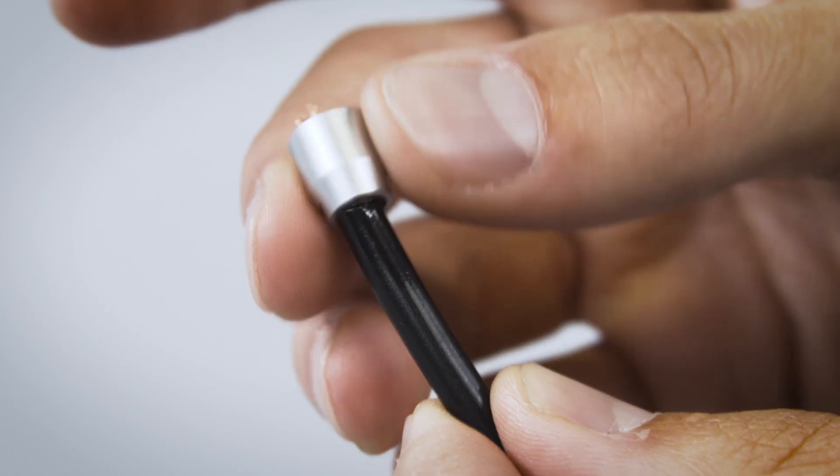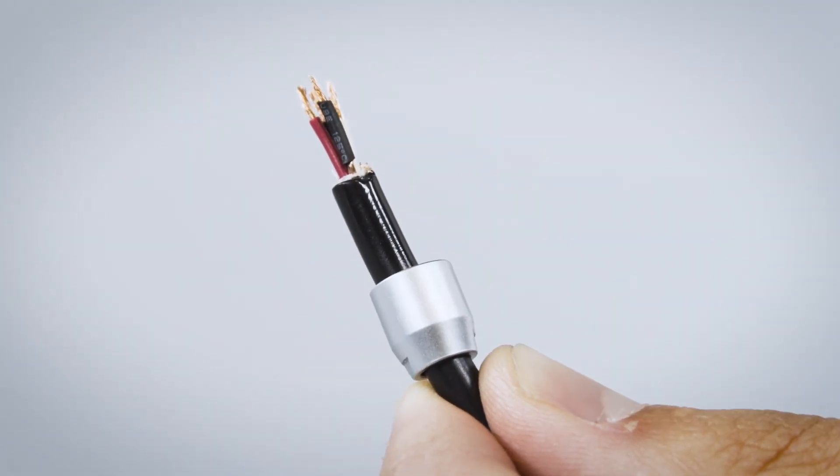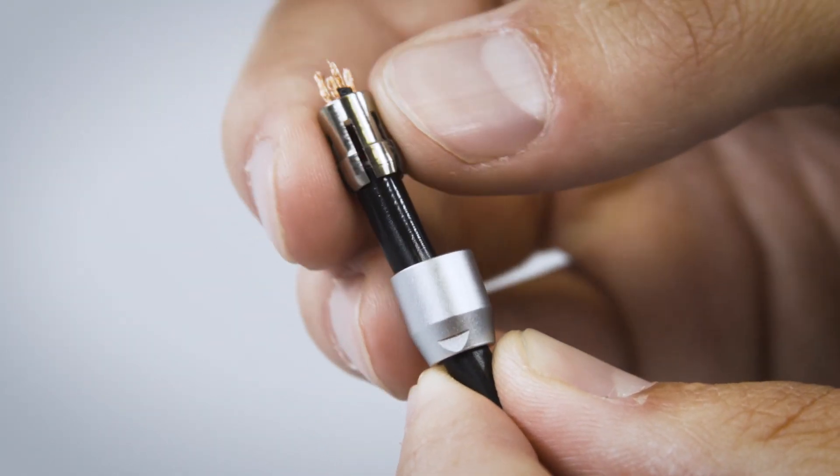Thread the collet nut onto the wire, tapered end first. Feed the collet onto the wire, multi-split side first.